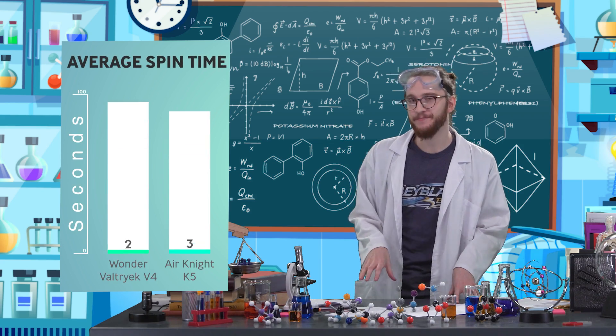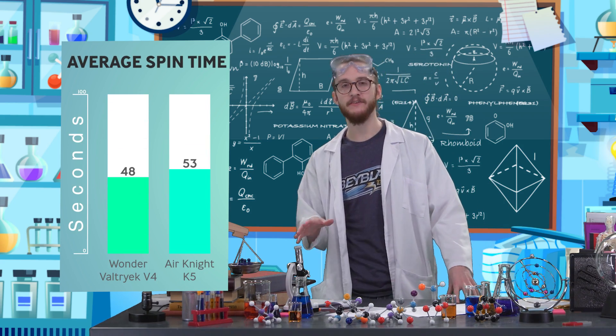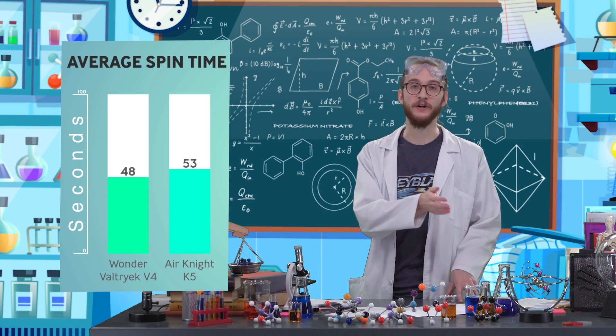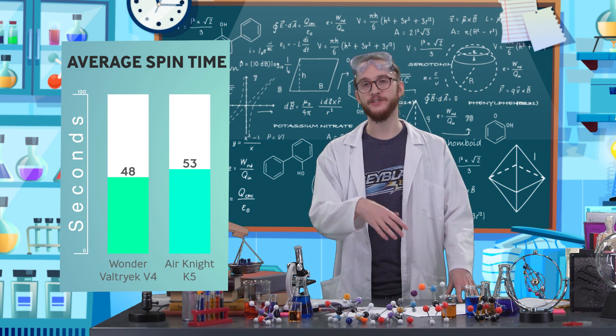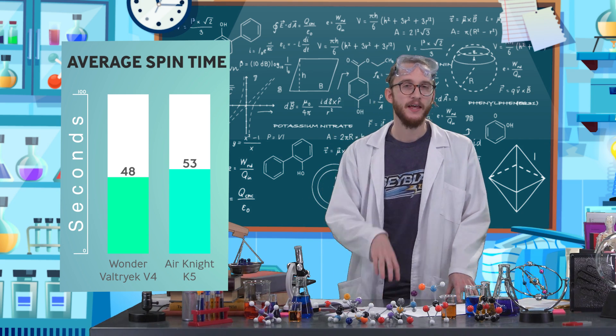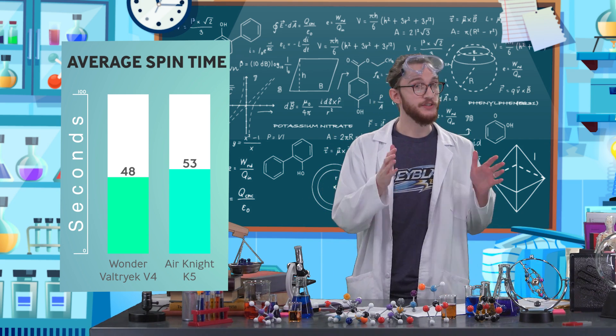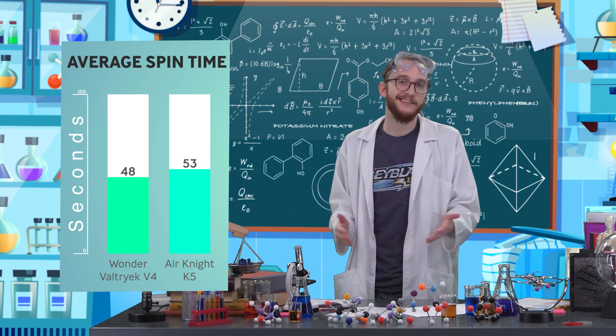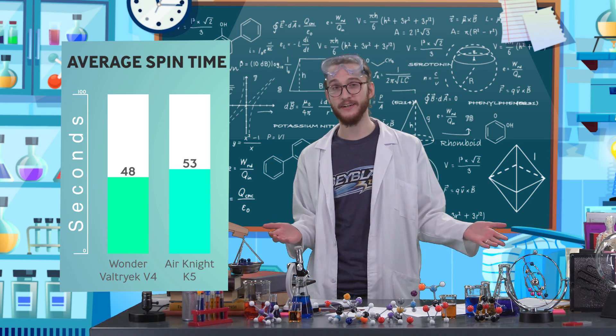We were right. Air Knight K5 spun for 5 seconds longer on average than Wanda Valtryek V4, which spun for 48 seconds on average. That's because it had more surface area and so more drag. It didn't have a lot of aerodynamics.